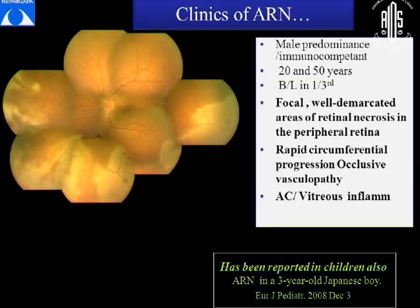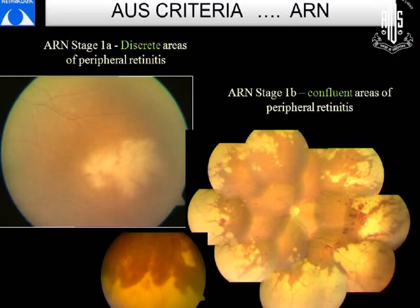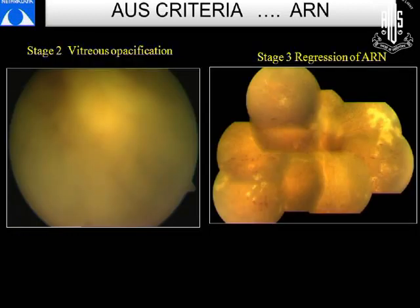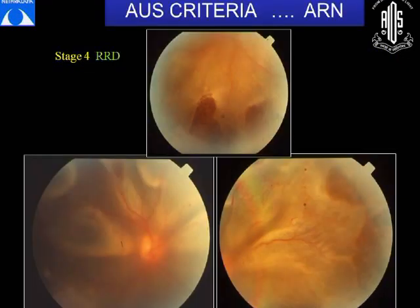Just to go over quickly the clinics of ARN, it occurs most commonly in males, immunocompetent, between 20 to 50 years of age. It is bilateral in one-third of patients. The lesions are focal, well-demarcated areas of retinal necrosis, mostly in the periphery. They spread circumferentially, and there is progressive occlusive vasculopathy with anterior chamber and vitreous inflammation. ARN has also been recently reported in children. The American Uveitis Society criteria for ARN: stage 1a — discrete lesions; stage 1b — confluent lesions; stage 2 — vitreous opacification; stage 3 — regression; stage 4 — sequelae with rhegmatogenous retinal detachments.